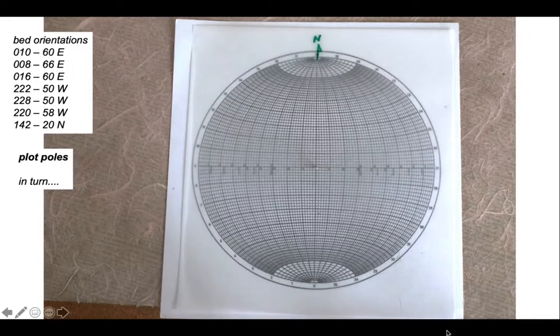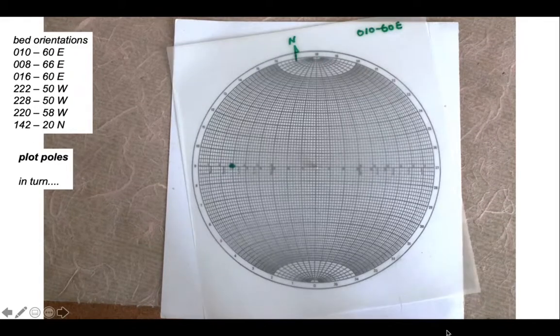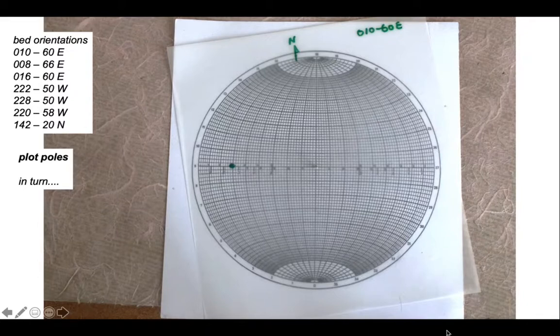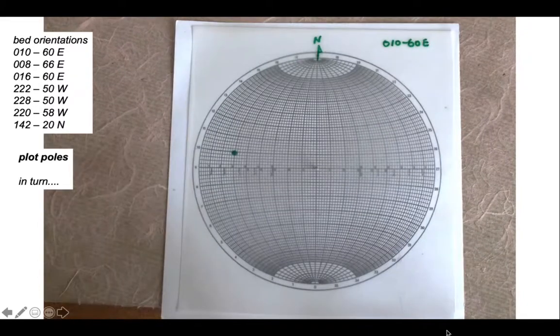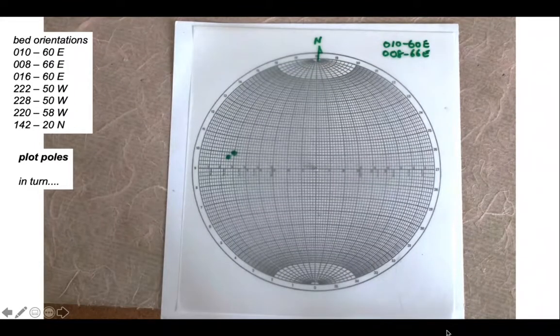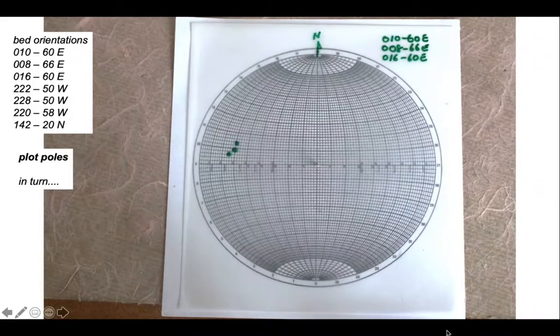I'm going to assume you know how to plot poles to bedding, so we can just crack on with this new part of the analysis. Here's the first bedding orientation: 010 60 east. The pole therefore sits over there in the western quadrant. Now let's plot the others. Here's 008 66 east, here's 016 60 east. All three of these beds dip east, so the poles plunge west.